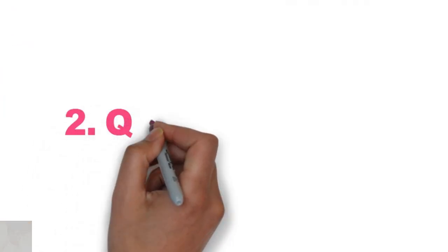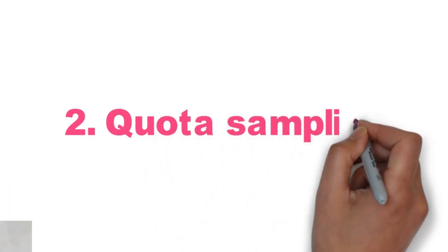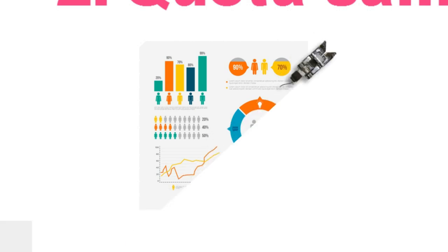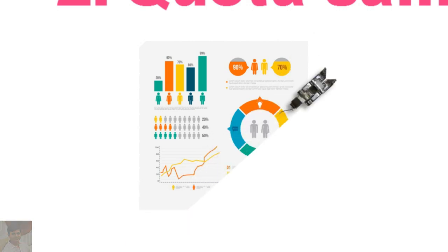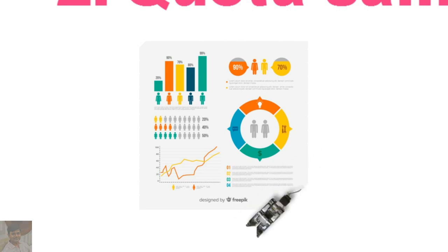Number 2: Quota Sampling. Quota sampling is defined as a non-probability sampling method in which researchers create a sample involving individuals who represent a population, choosing these individuals according to specific characteristics or qualities. In quota sampling, the population is classified into a number of groups based on criteria such as age, gender, education, income, and location. Ideally, the quota chosen would proportionally represent the characteristics of the underlying population.